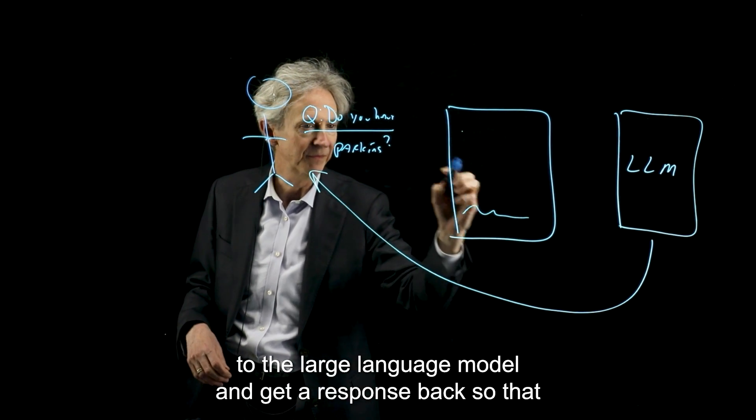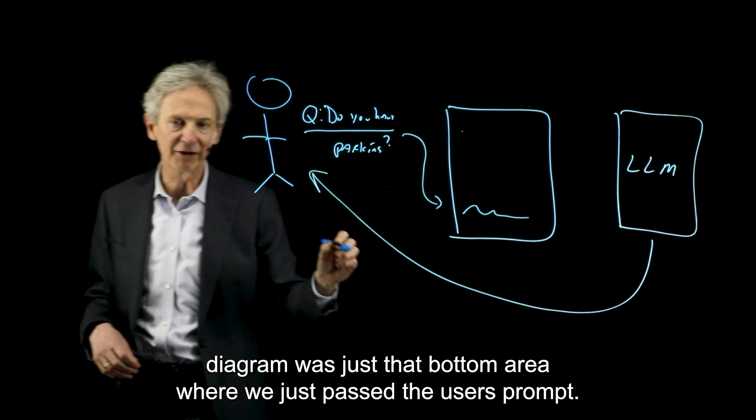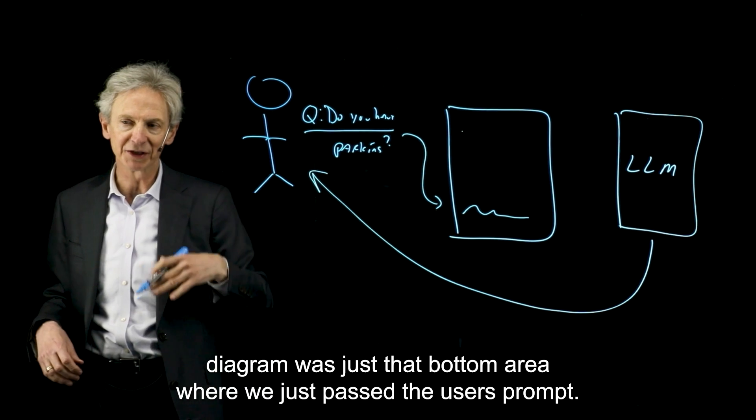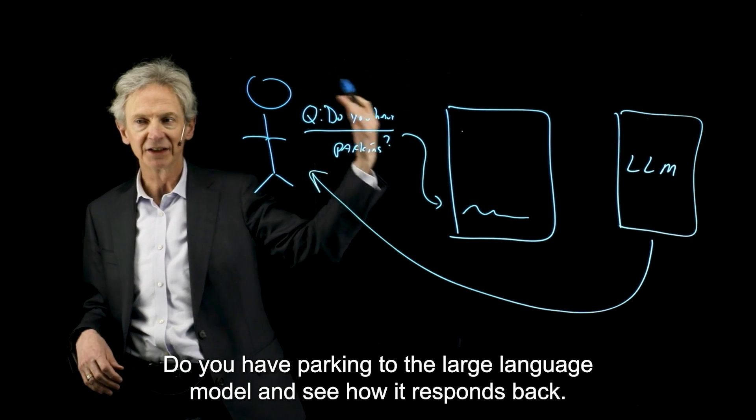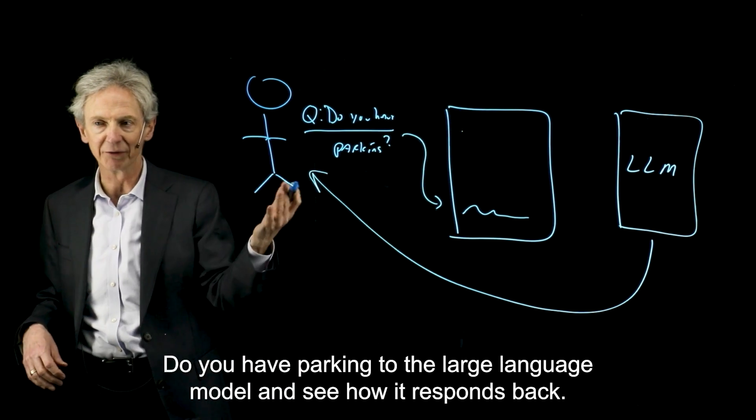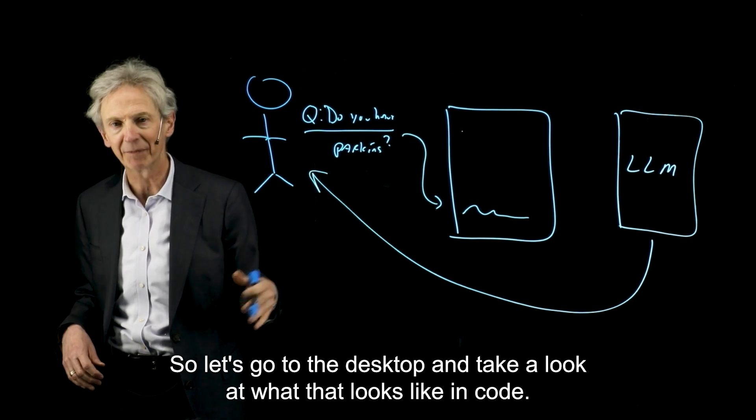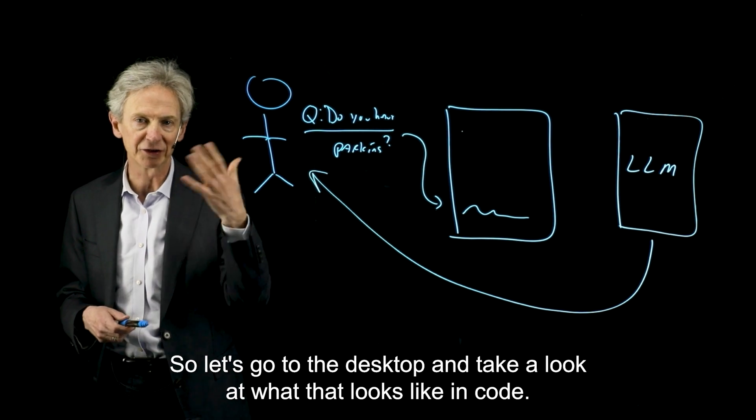So that, in my prior diagram, was just that bottom area where we just passed the user's prompt, do you have parking, to the large language model and see how it responds back. So let's go to the desktop and take a look at what that looks like in code.